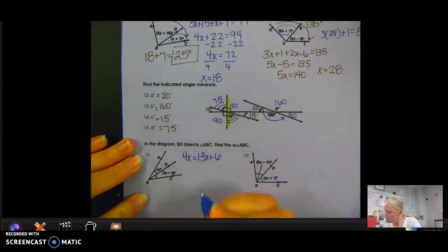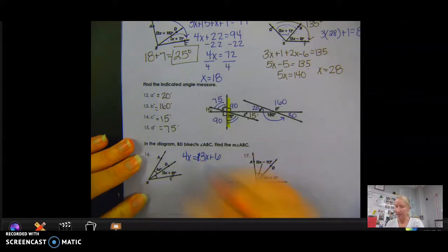I'm going to... no, that's 3x. Sorry, not 13x. Okay, so I'm going to subtract 3x from both sides and get 1x equals 6.